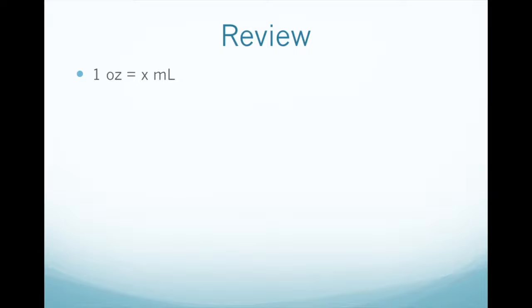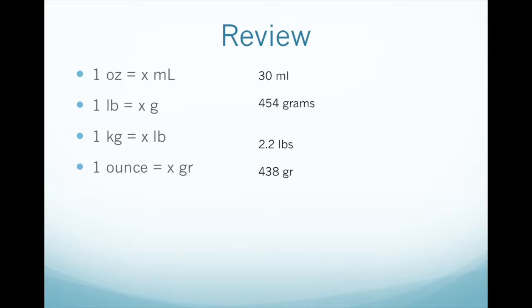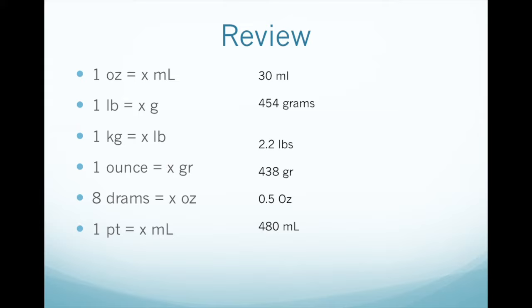For the math: how many milliliters are in one ounce? 30 milliliters. How many grams in a pound? 454 grams. How many pounds in a kilogram? 2.2 pounds. How many grains per ounce? 438 grains. How many ounces in 8 grams? 0.5 ounces. How many milliliters in a pint? 480 milliliters. How many teaspoons in a tablespoon? 3 teaspoons.